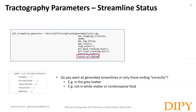Another parameter is return_all. By default, it is set to true and thus will return all generated streamlines, including those ending in the white matter or CSF. Depending on your case study, you may or may not be interested in those streamlines.